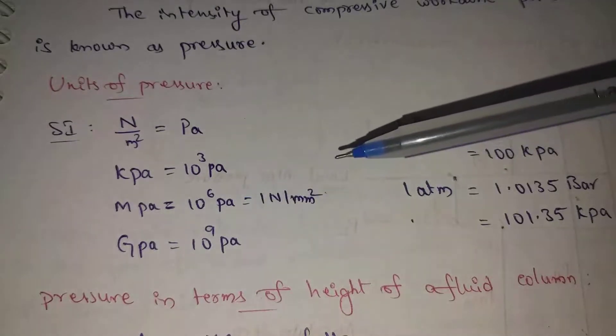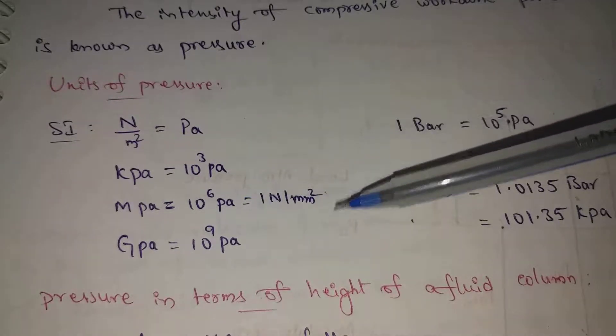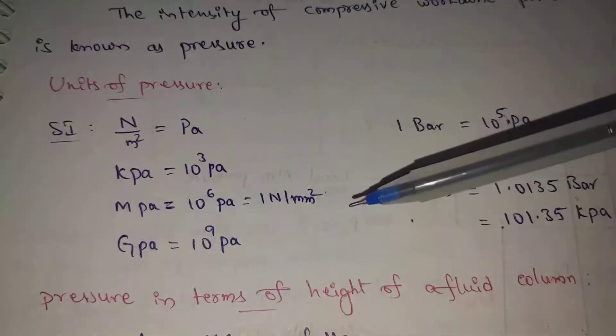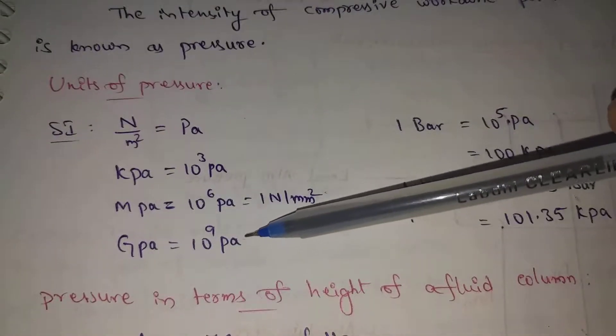Here we are going to convert 1 newton per mm square. Additional, GPA: gigapascal equals 10 power 9 Pascal.